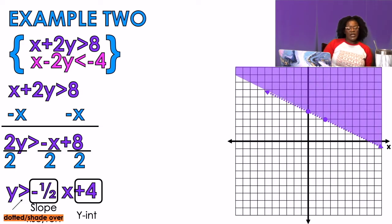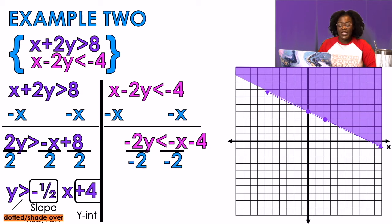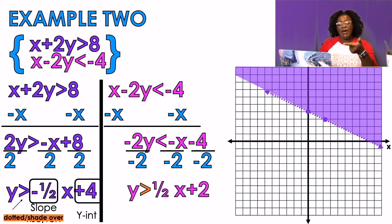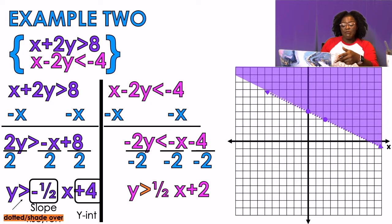For the pink equation, I subtract x from both sides and divide by negative 2. There's a special rule with inequalities: when you divide by a negative, you flip your symbol. In the purple equation I divided by positive 2, so the symbol stayed the same. In the pink equation I divided by negative 2, so I flip my symbol — it was less than and now becomes greater than.